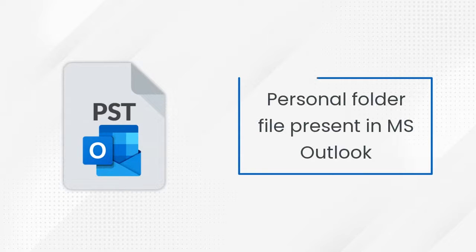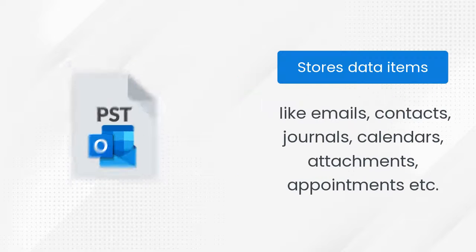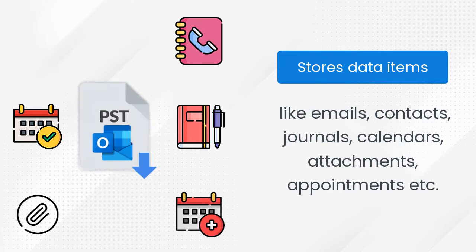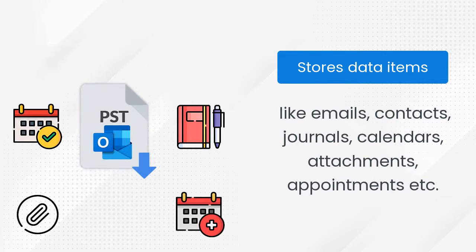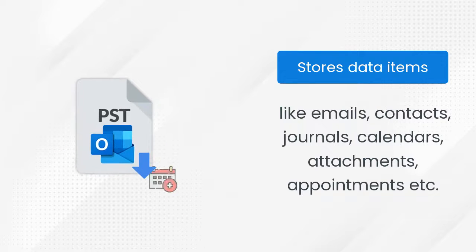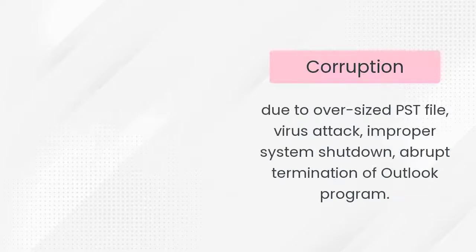A PST file is a kind of personal folder file present in MS Outlook. It stores entire data items including emails, contacts, journals, calendars, attachments, appointments, etc.